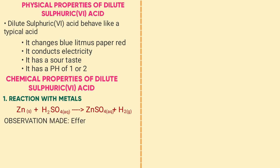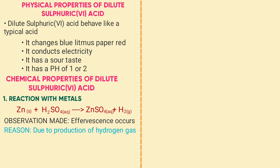Reaction with metal oxides — example: CuO + H₂SO₄ → CuSO₄ + H₂O. Bases react with acid to form salt and water in a reaction called neutralization. Reaction with carbonates — example: Na₂CO₃ + H₂SO₄ → Na₂SO₄ + CO₂ + H₂O. Observation: bubbles of gas are produced due to the production of carbon dioxide gas.